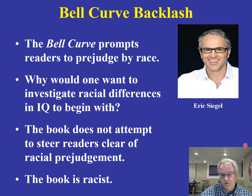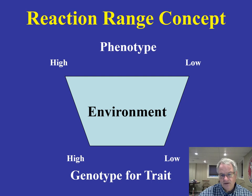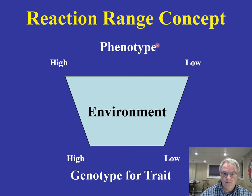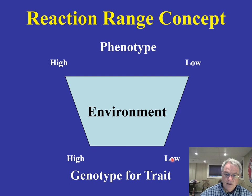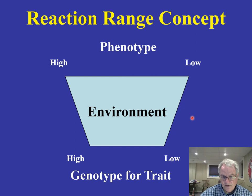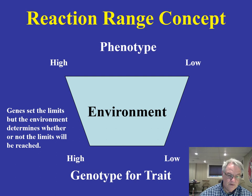When we take a look at genes, environment, and IQ, the concept called the reaction range comes from biology. Our genetic background for a trait like intelligence can exist along a continuum from high to low. Our phenotype — the expression of that genetic background, whether physical or behavioral — can be high or low, but it's really the environment that determines whether we reach those extremes. Genes set the limits, but the environment determines whether those limits are reached.